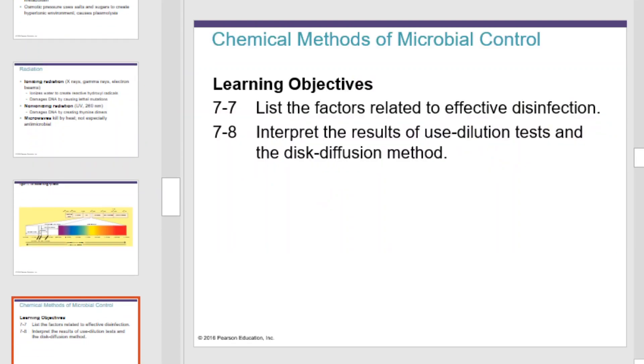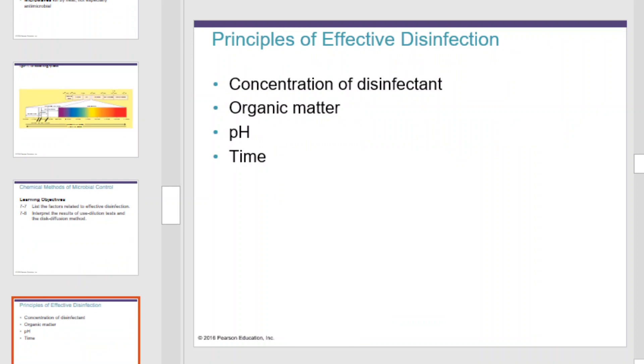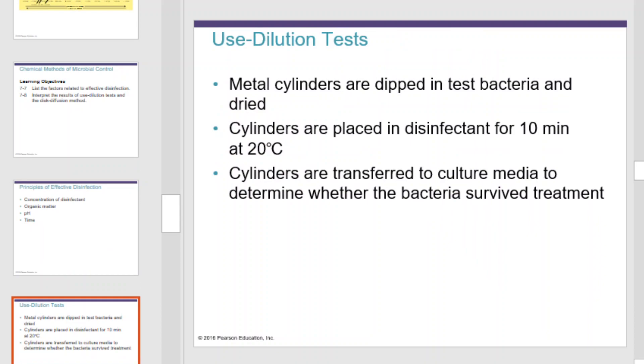Chemical methods of microbial control: the principles of effective disinfection include the concentration of disinfectant, organic matter, pH, and time. We use disc dilution tests to determine the exact concentration of chemicals necessary to achieve the desired effect. Metal cylinders can be dipped in test bacteria and dried, then placed in a disinfectant for 10 minutes at 20 degrees Celsius, and transferred to culture media to determine whether bacteria survived.